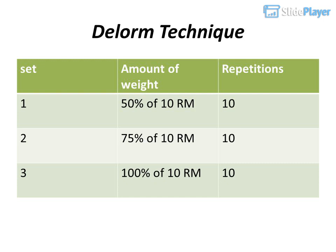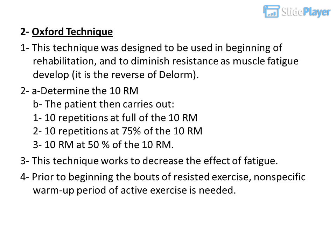2. Oxford technique: this technique was designed to be used at the beginning of rehabilitation, and to diminish resistance as muscle fatigue develops — it is the reverse of the DeLorme method. A. Determine the 10RM. B. The patient then carries out: 10 repetitions at 100% of 10RM, 10 repetitions at 75% of 10RM, and 10RM at 50% of 10RM. This technique works to decrease the effect of fatigue. Prior to beginning the bouts of resisted exercise, a non-specific warm-up period of active exercise is needed.